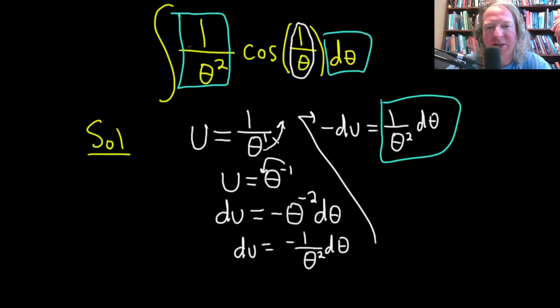So now we can make our substitution. I'll write it over here. So the 1 over theta squared d theta is going to be negative du. So I'll pull the negative out like that. And then we have cosine of u.